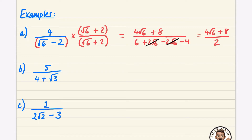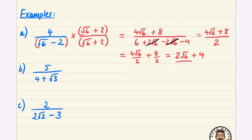Now think carefully about what's going on: we have four root six plus eight being divided by two. You could just divide each part of the numerator by two separately — that's splitting the numerator. Four root six divided by two is two root six, and eight divided by two is four. So the final expression for this question is two root six plus four.